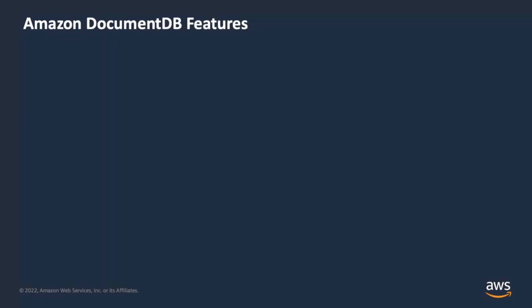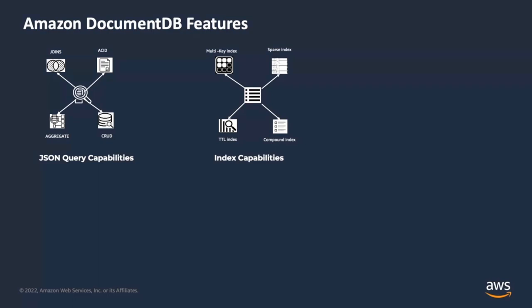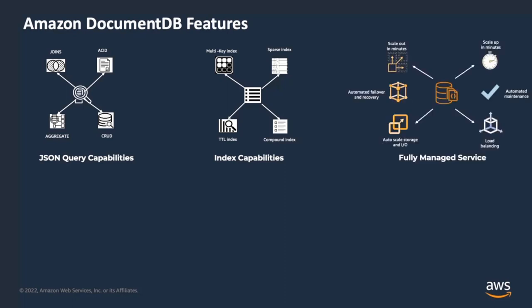DocumentDB provides powerful query capabilities. You can perform joins, ACID transactions, along with complex aggregations like groups and counts. To support these queries, various types of indexing are supported: simple index, compound index, time-to-live index, array index, sparse index, and more. The fully managed service makes scaling, patching, provisioning, automated maintenance, and failover features possible, so you can focus on what matters to your business and not worry about the undifferentiated heavy lifting managed by AWS.